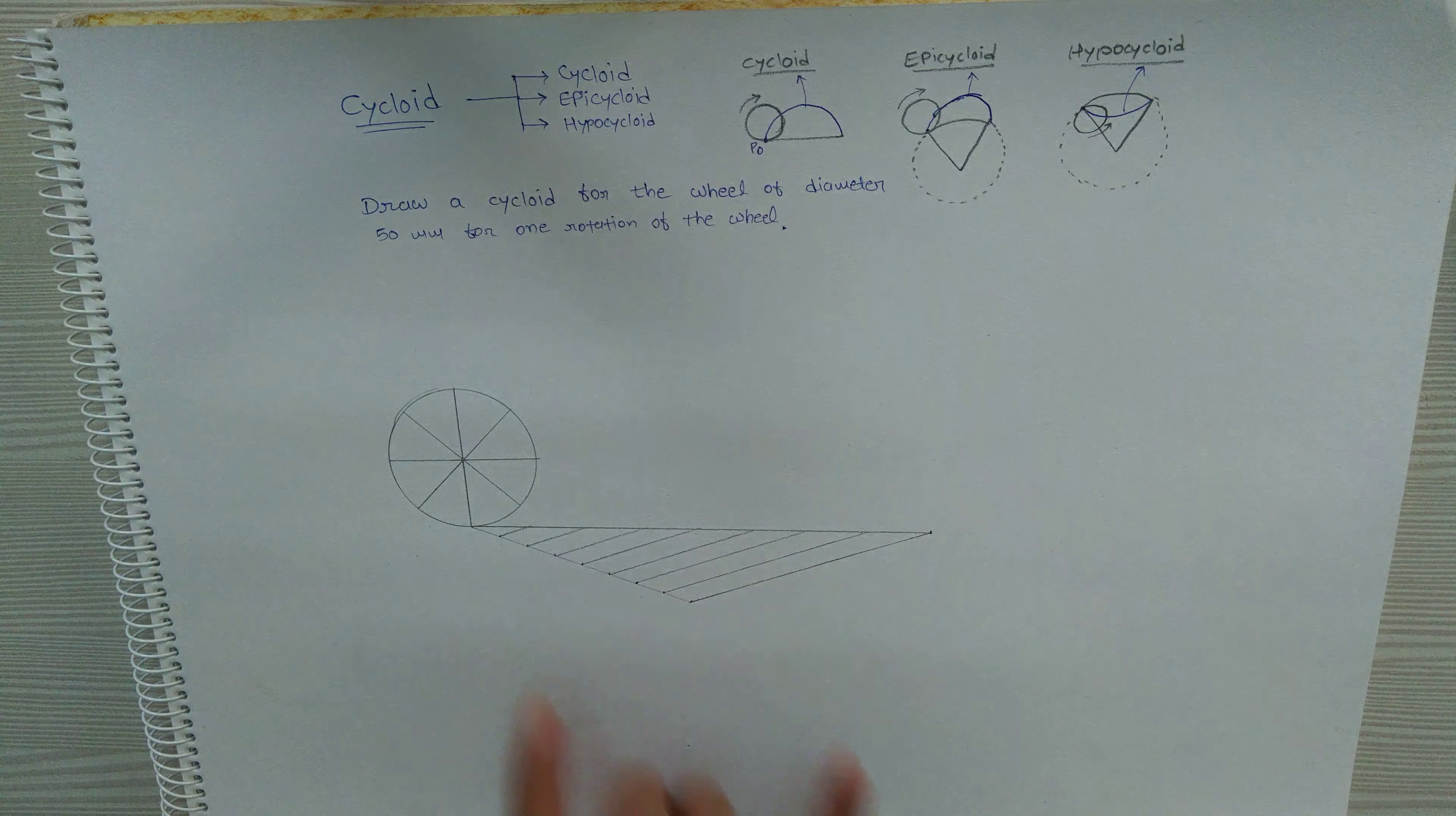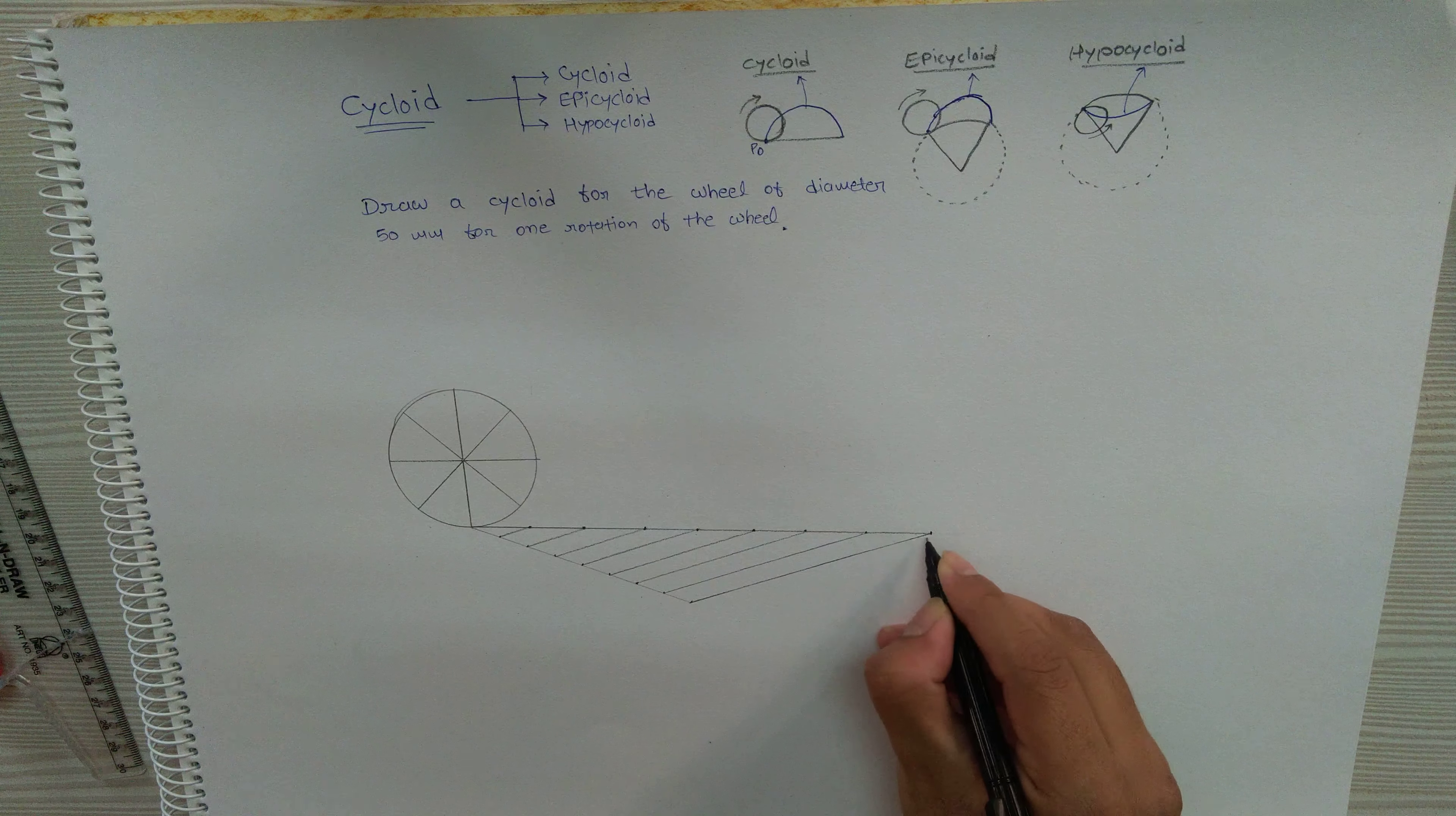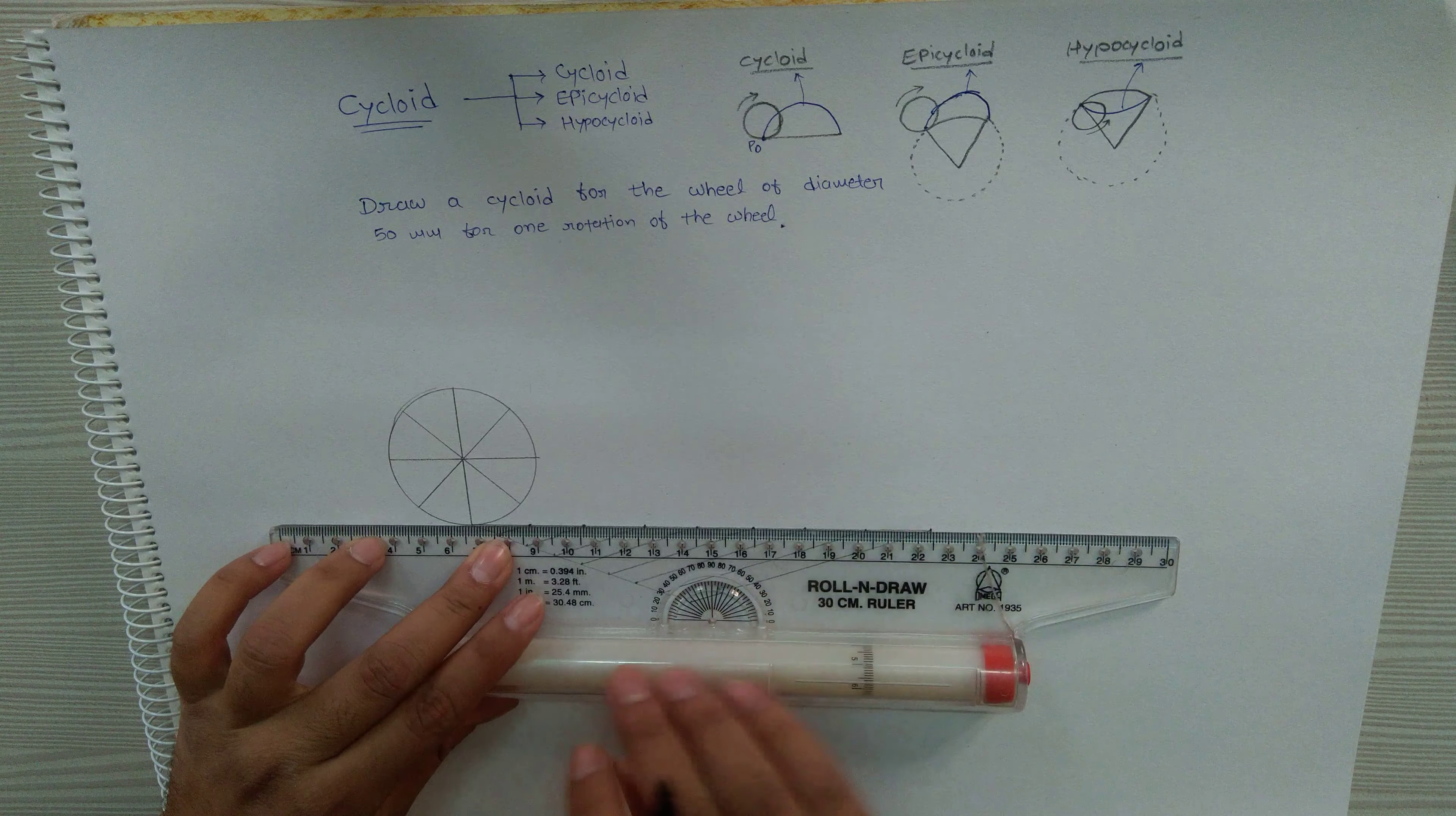Now we have eight equal parts here on the line. Also draw parallel lines from points on the circle.